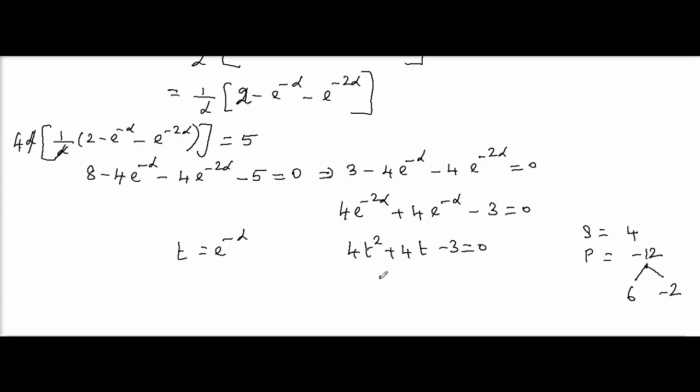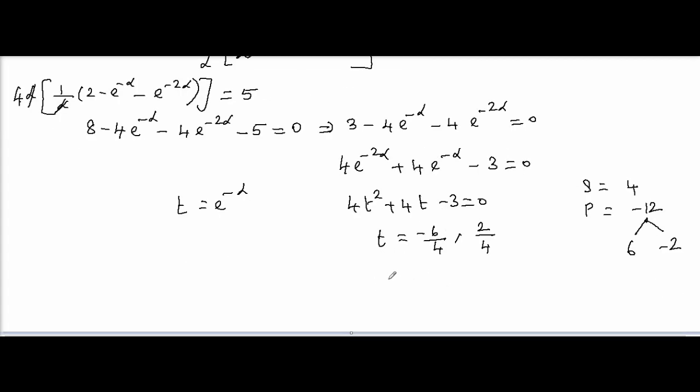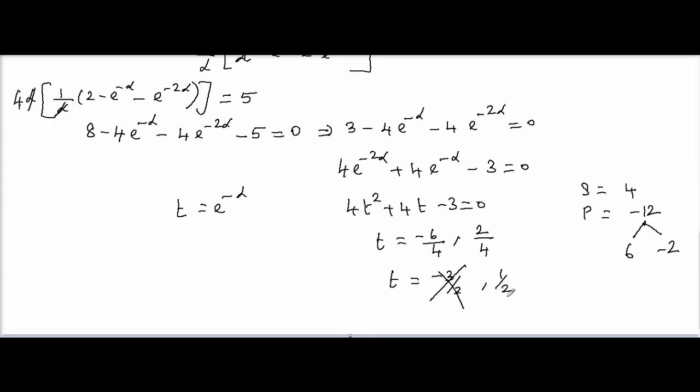Then, t will be equal to -6/4 and 2/4. Now, I get t equal to -3/2 or 1/2. t equal to -3/2 is not possible. t equal to 1/2 is the only possible value.